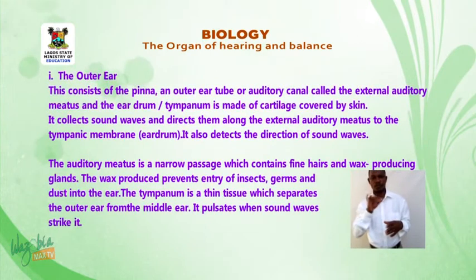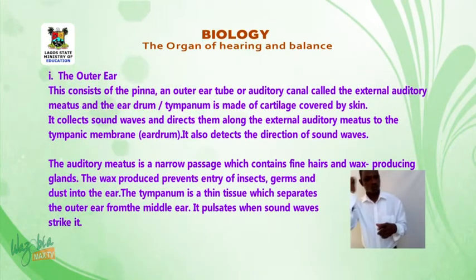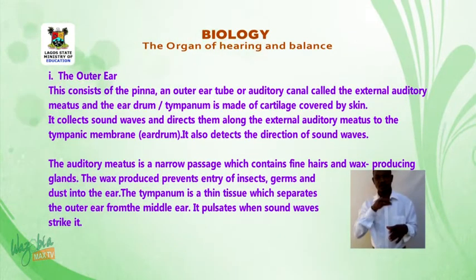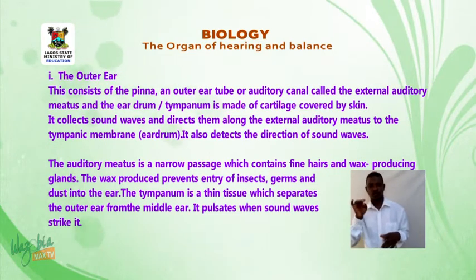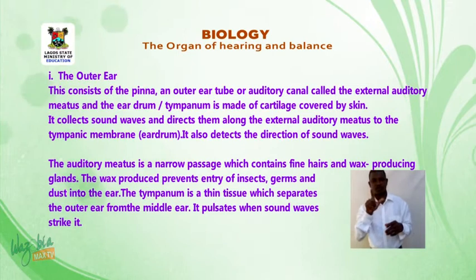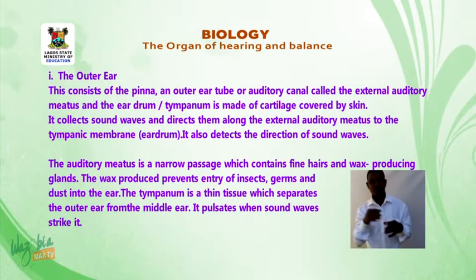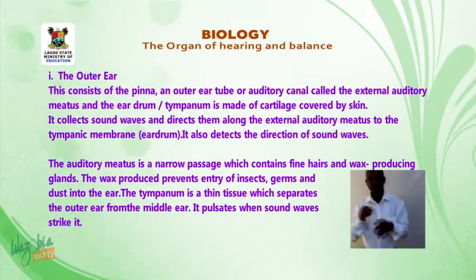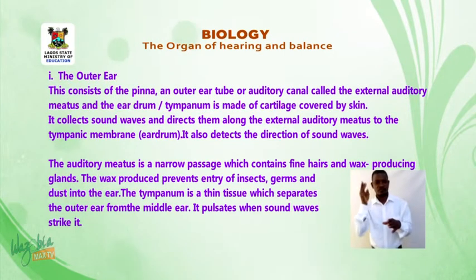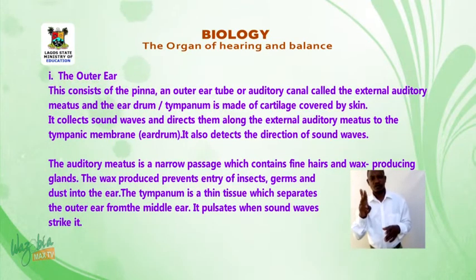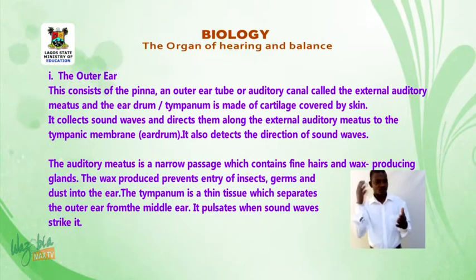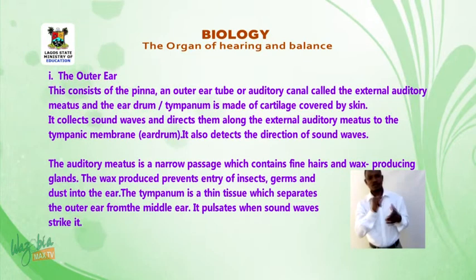The outer ear consists of the pinna and the outer ear tube or auditory canal called the external auditory meatus. The eardrum or tympanum is made up of cartilage covered by skin. It collects sound waves and directs them along the external auditory meatus to the tympanic membrane. It also detects the direction of sound waves.